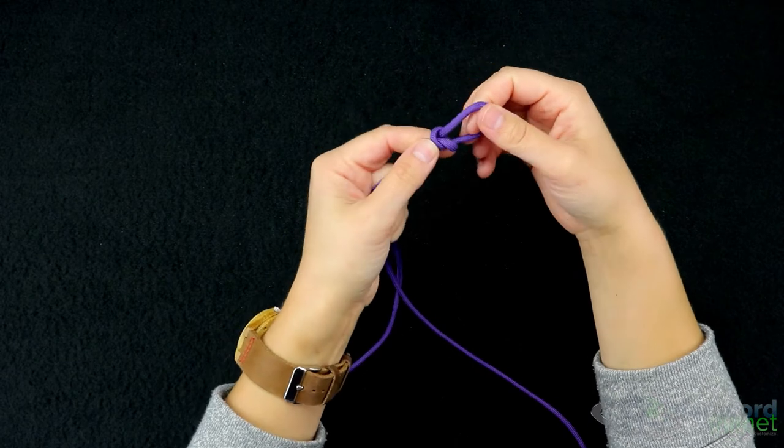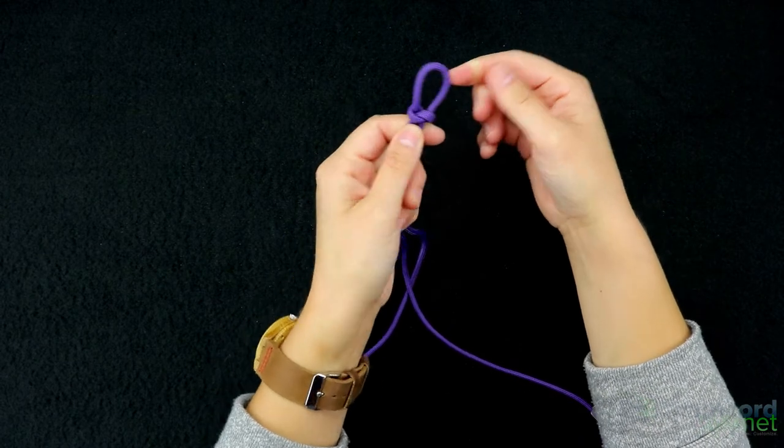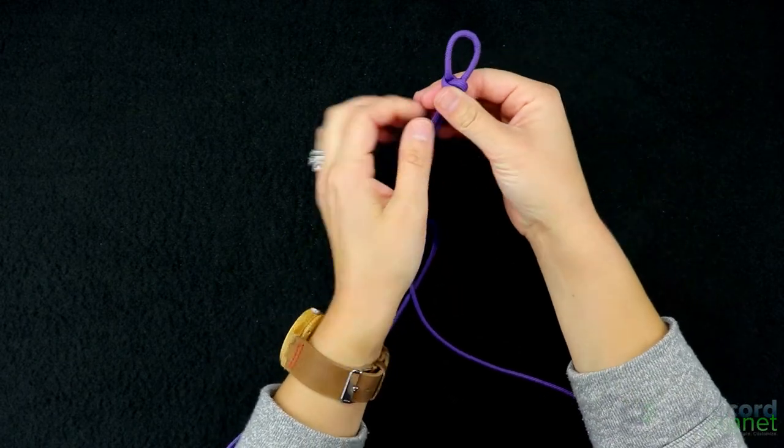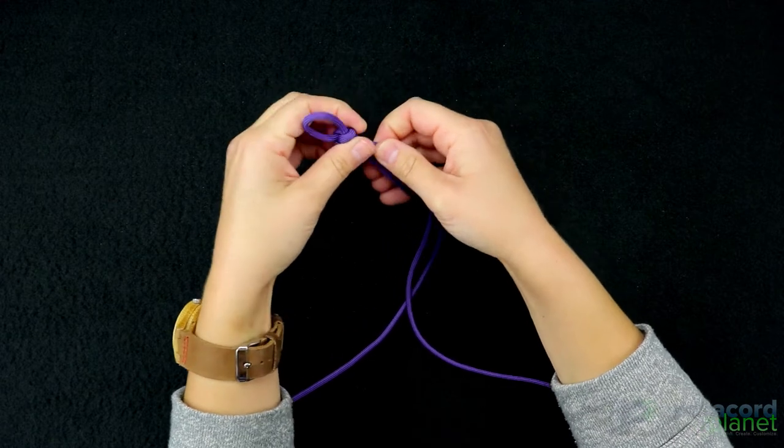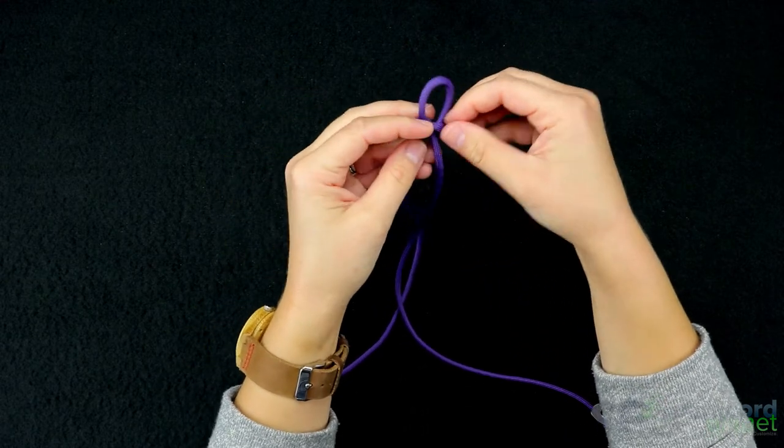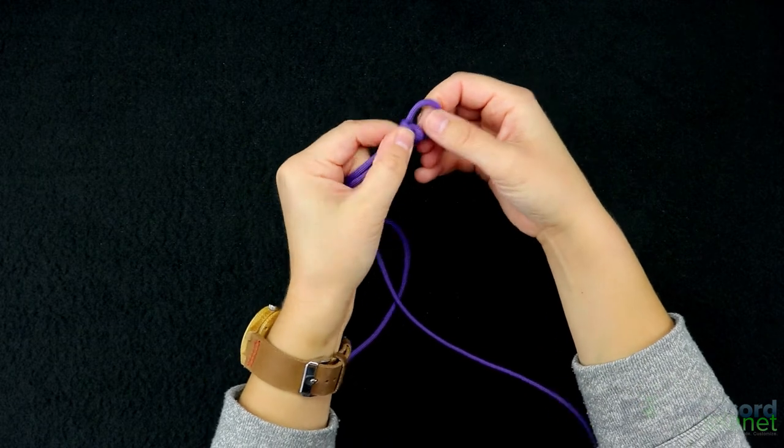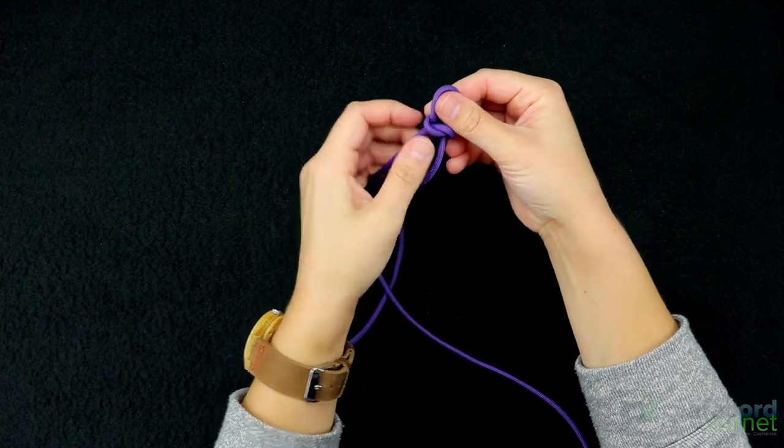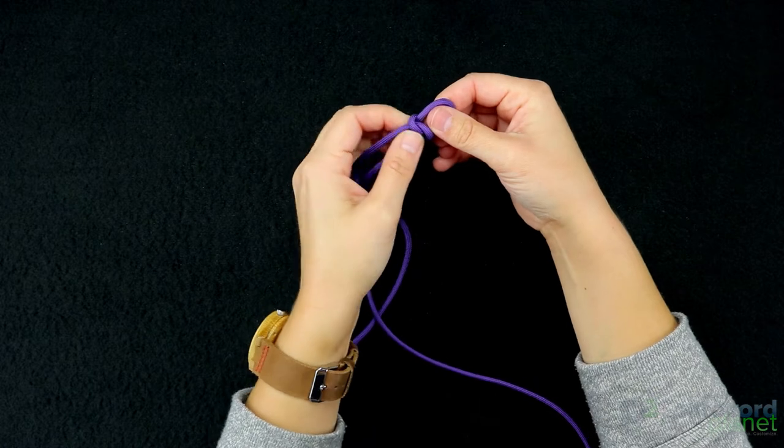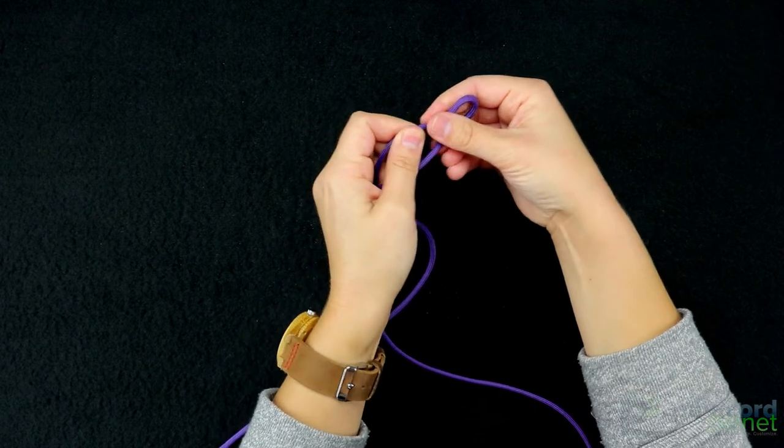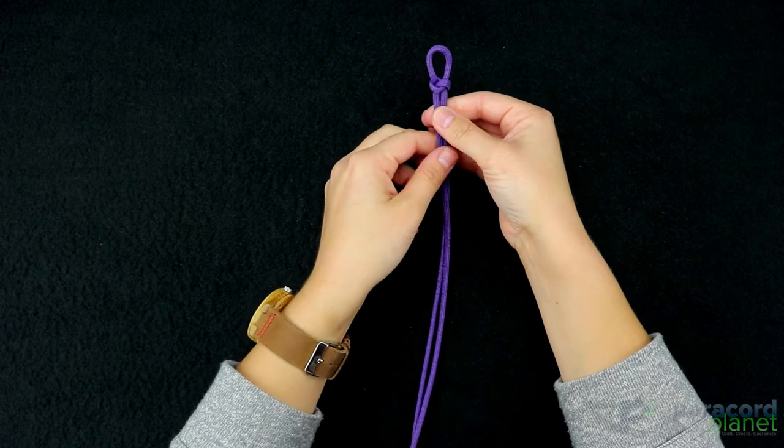Then just pull that tight and adjust it to the size that you want your loop, and I want mine a little bit smaller so I'm just going to tighten this up a little bit. Okay, so that's how mine is there.